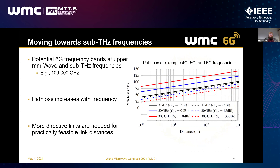The upper millimeter wave sub-terahertz frequencies are one area where these things can be achieved. For instance, at the 100 to 300 gigahertz frequency range, we see a clear increase of path loss as a function of frequency. At 300 gigahertz, we are at about 80 dB per meter, which starts to be a lot. As a result, we need something to counter this loss.